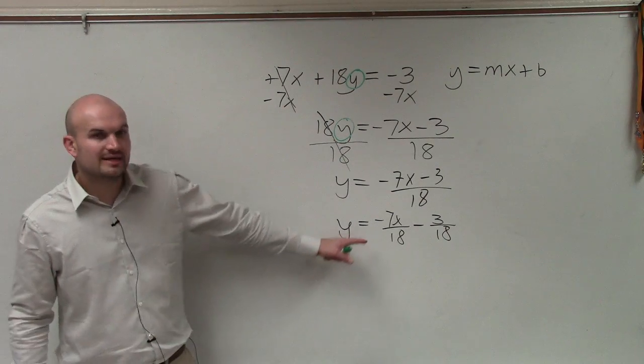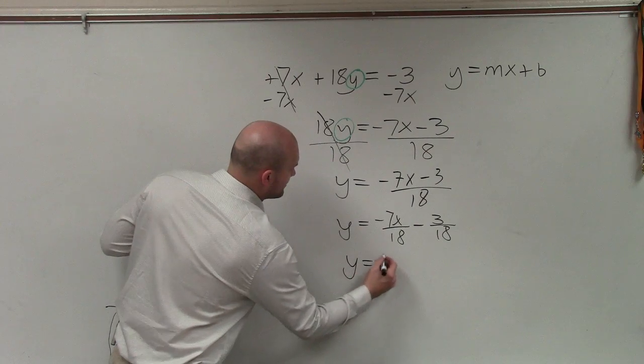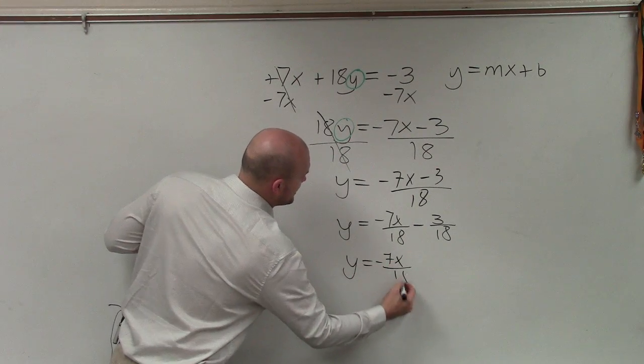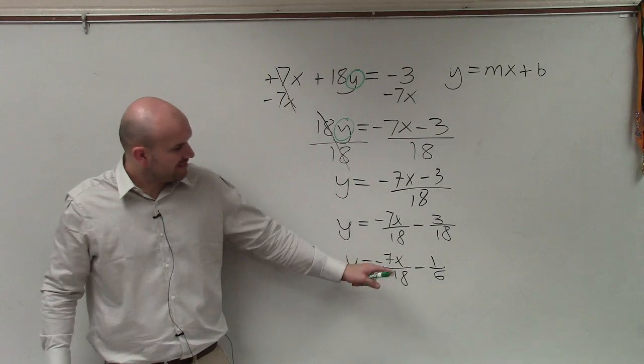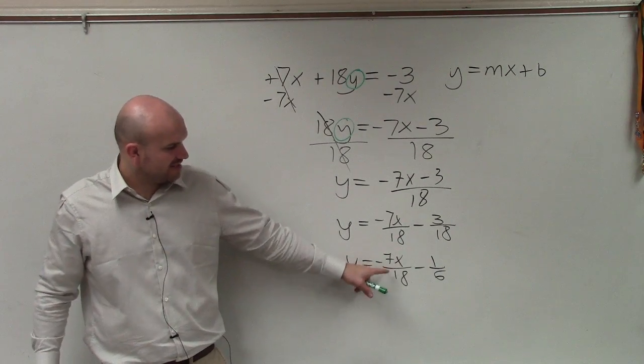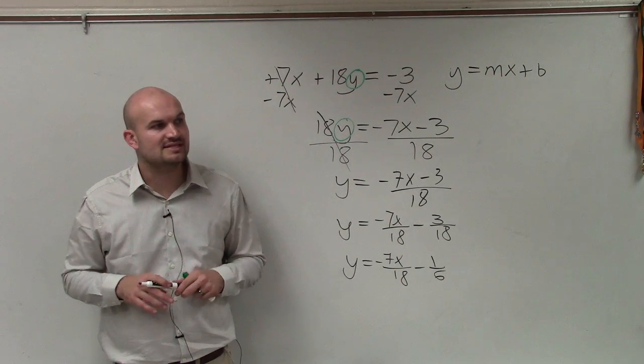And then we can simplify, where this can be simplified to 1 sixth. So y equals negative 7x over 18 minus 1 sixth. All right, so look to simplify them. Then we can see that the slope is negative 7 eighteenths, and the y-intercept is negative 1 sixth.